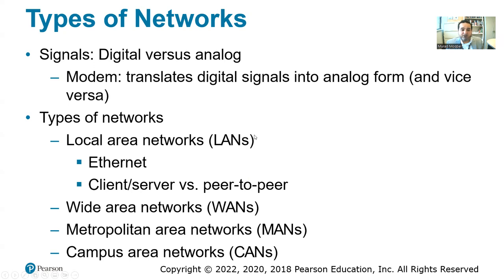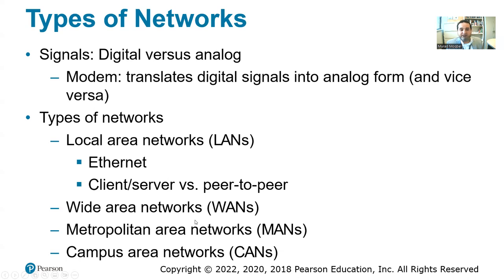We have different types of networks. A local area network (LAN) has multiple computers connected to a server, or peer-to-peer computer-to-computer. We use ethernet technology — wires connecting computers. With peer-to-peer, two computers can connect without having a server. Then we have wide area networks (WAN) for country, region, or transcontinental networks. We have metropolitan area networks (MAN) for a city or metro area. And campus area networks (CAN) for a campus, like a university campus or Apple's company campus.